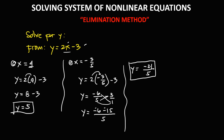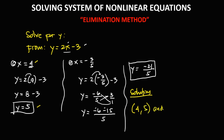Therefore, the solutions of the system are: if x equals positive 4, then y equals positive 5; and if x equals negative 3 over 5, then y equals negative 21 over 5. These are the solutions of this nonlinear system of equations.